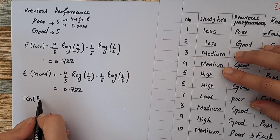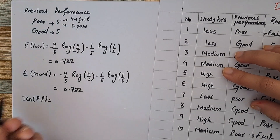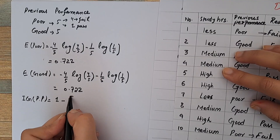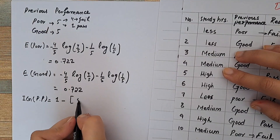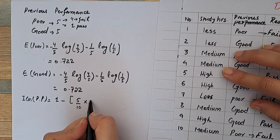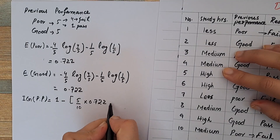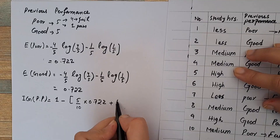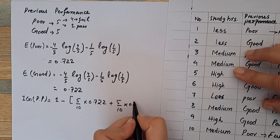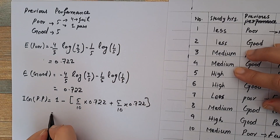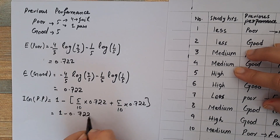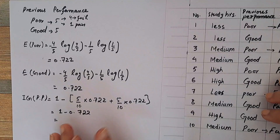The information gain for previous performance equals entropy of overall data (1) minus: probability of poor (5/10) times entropy of poor (0.722), plus probability of good (5/10) times entropy of good (0.722). Simplifying: 1 minus 0.722 equals 0.278. So information gain for previous performance equals 0.278.